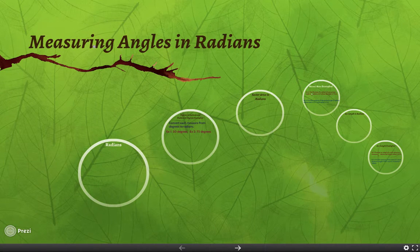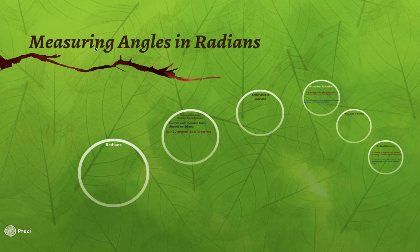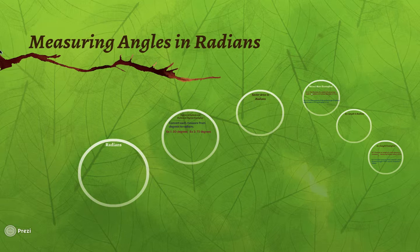Hi guys, the last section we'll be talking about in our circles unit is on measuring angles and radians. A lot of things we're going to talk about are things we actually already talked about, like sector area and arc length, but this time our angle will not be in degrees. There are more than one way to measure an angle — one way is by degrees, the other way is by radians.